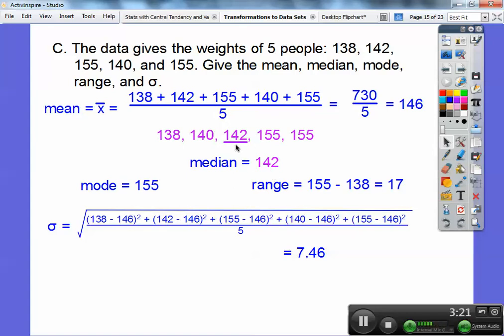Now if there was two numbers in the middle, because sometimes there are you guys, if there's an even number of numbers, there's two numbers in the middle. You have to average those two numbers in the middle. So add them together, divide by two. Okay, but anyways, the median here is 142. The mode is the one that we see the most, the 155. The range is the big number minus the small number.